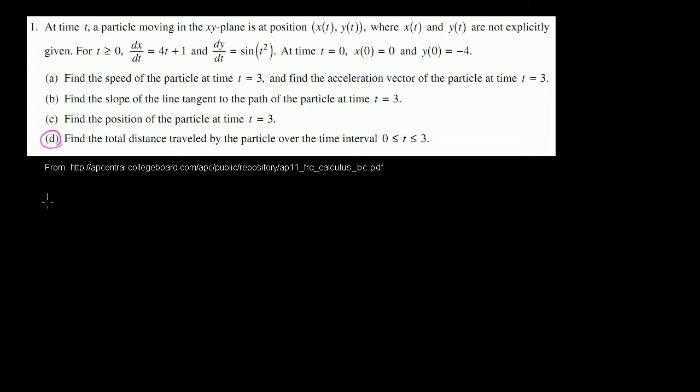So let's draw some axes here to make sure we understand what's going on. When t equals 0, where are we? They tell us x(0) is 0, and y(0) is -4. So we're at the point (0, -4).